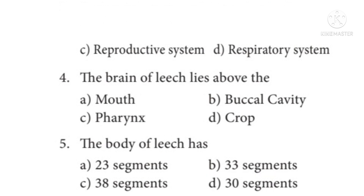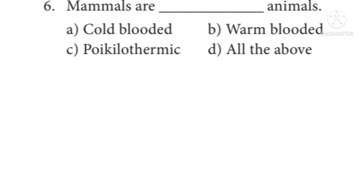Question 6: Mammals are warm-blooded animals. Options: A. Cold-blooded, B. Warm-blooded, C. Poikilothermic, D. All of the above. The correct answer is Option B: Warm-blooded.